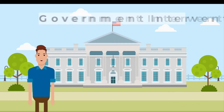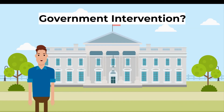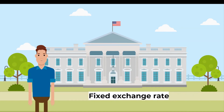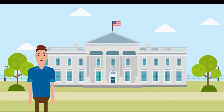How would a government intervene in the exchange rate? Firstly, a fixed exchange rate. A fixed exchange rate system refers to the case where the exchange rate is set and maintained at a level by the government, irrespective of market forces.